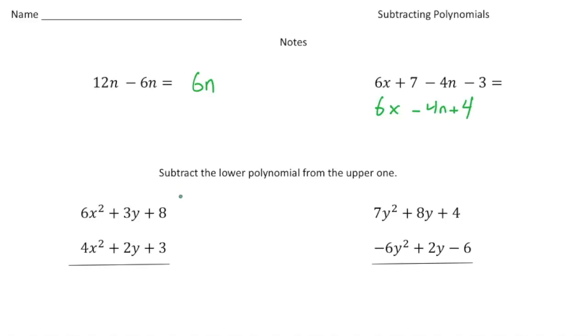Now this may look a little different. Here we have a problem set up vertically. It says subtract the lower polynomial from the upper one. So we're gonna subtract 4x² + 2y + 3 from 6x² + 3y + 8. I'm gonna put a subtraction sign here. So 6x² minus 4x² gives us 2x². 3y minus 2y gives us y, and 8 minus 3 gives us 5.